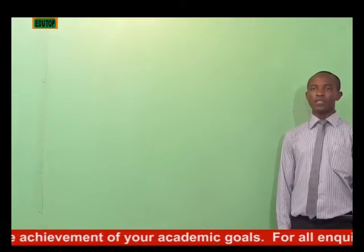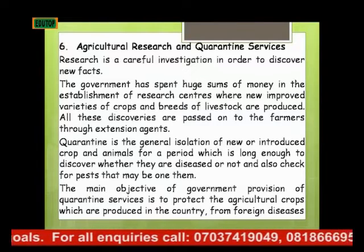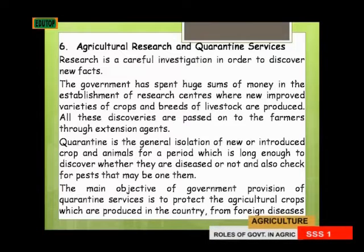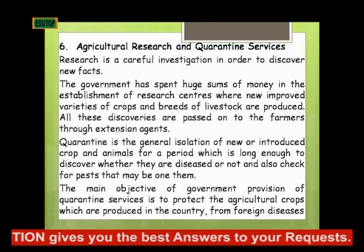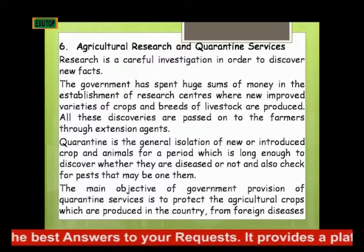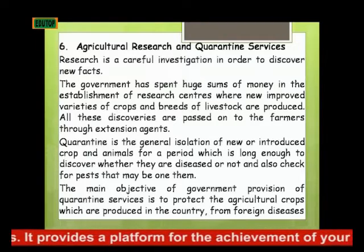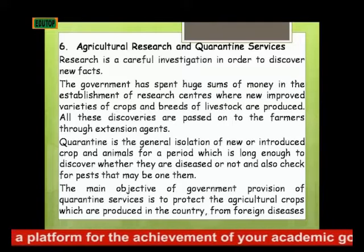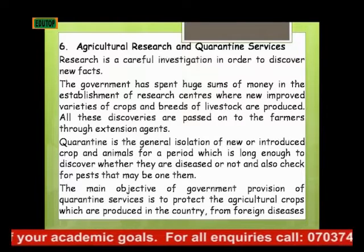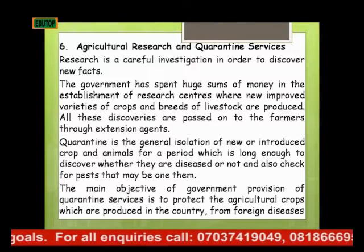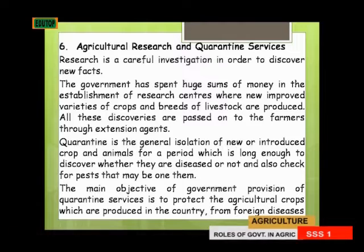Another role of government in agricultural development is the provision of agricultural research and quarantine services. Research is a careful investigation in order to discover new facts. The government has spent considerable sums of money in the establishment of research centers where new improved varieties of crops and breeds of livestock are produced. All these discoveries are passed to the farmers through extension agents. Quarantine is the general isolation of new or introduced crops and animals for a period long enough to discover whether they are diseased or not and to check for pests that may be on them.